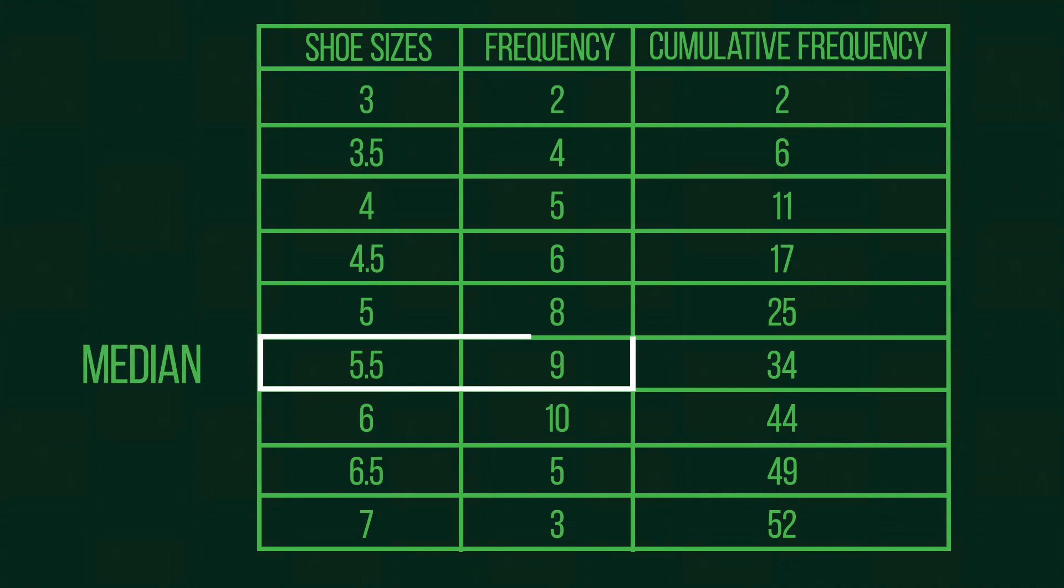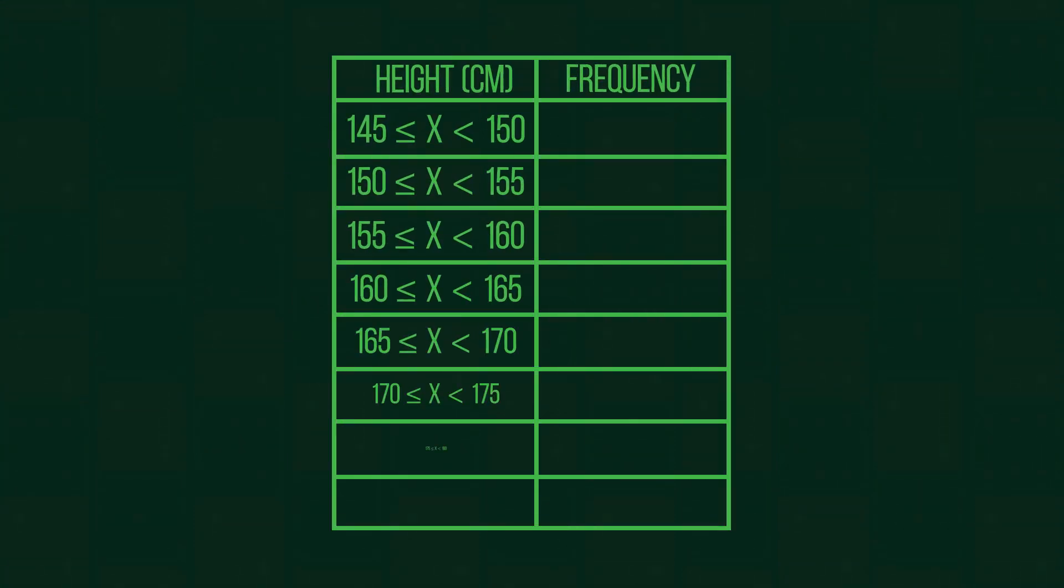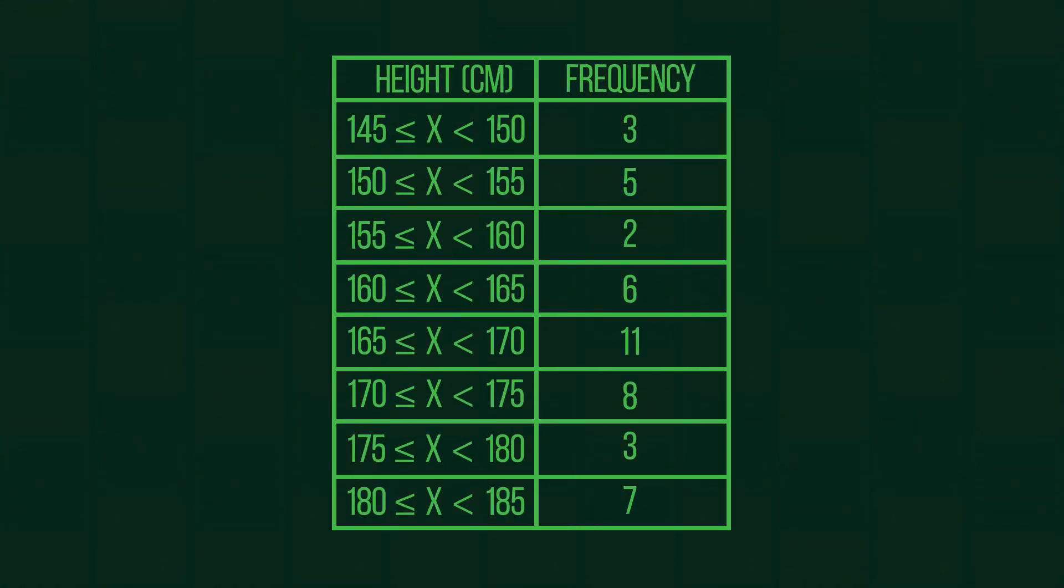You may also need to be able to find the median of data from frequency tables which look like this. This data shows the height of a group of people. As you can see, this data has no specific value; it is grouped data shown in intervals. Any median we calculate will therefore be a group median, as we cannot calculate an exact median value from this.